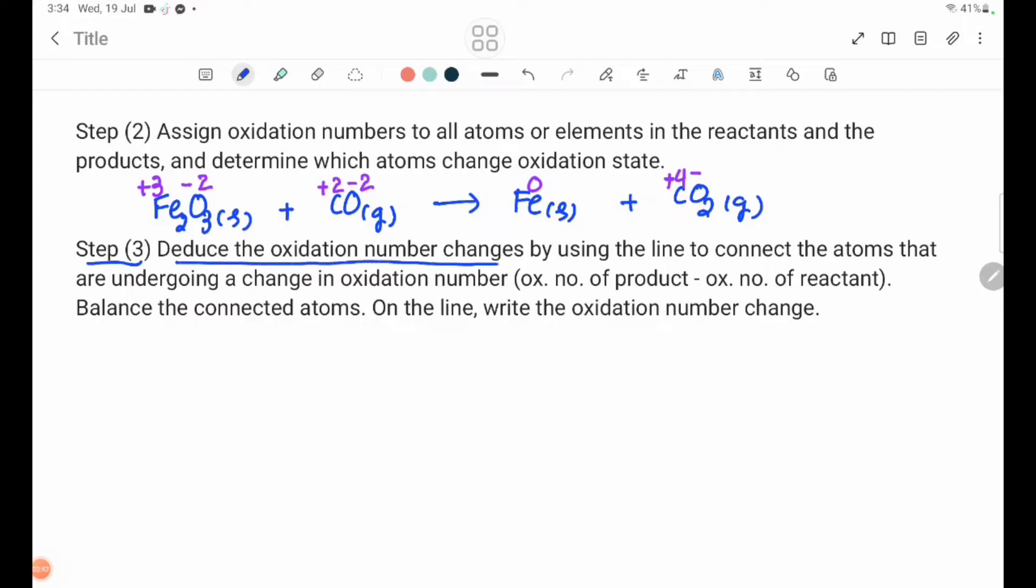Deduce the oxidation number changes by using the line to connect the atoms that are undergoing a change in oxidation number. Balance the connected atoms. On the line, write the oxidation number changes.